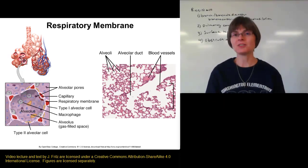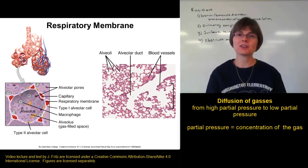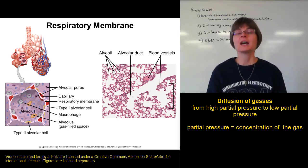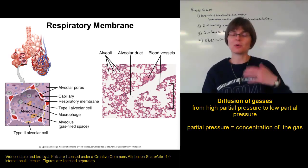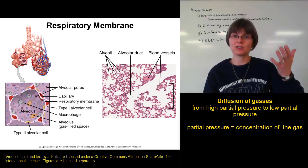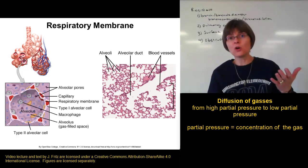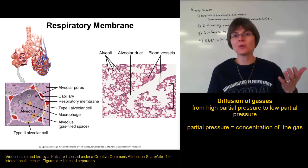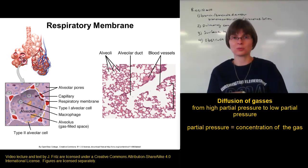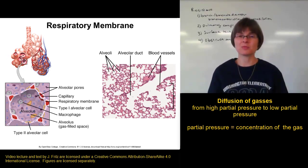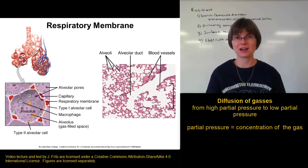When we're talking about the diffusion of gases, gases are going to diffuse from areas of higher partial pressure to areas of lower partial pressure. Partial pressure is nothing more than a measure of the concentration of a gas. So if I have a high partial pressure of oxygen, that means I have a high concentration of oxygen, and a low partial pressure of oxygen would be a low concentration of oxygen. Gases want to move from high partial pressure to low partial pressure, just like everything else moves from areas of high concentration to areas of lower concentration.